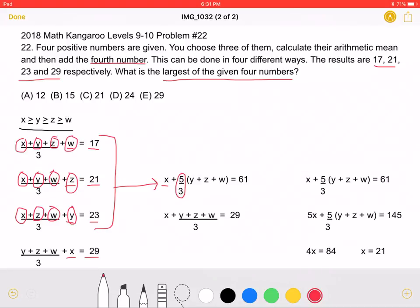So we can factor out the 5 thirds as so. And again, this will give us a total of 17 plus 21 plus 23, which is 61. And we can also write this equation again over here.